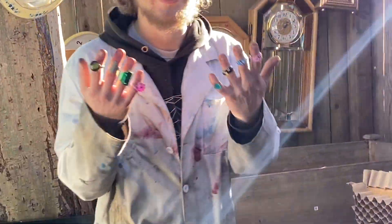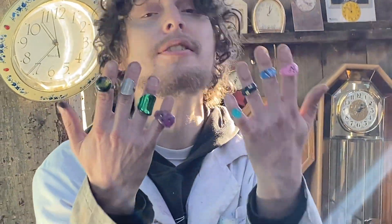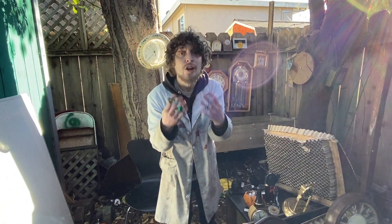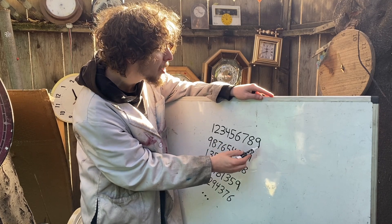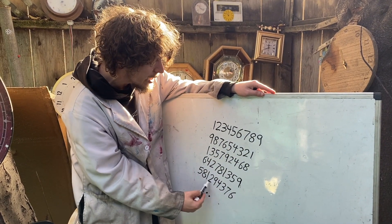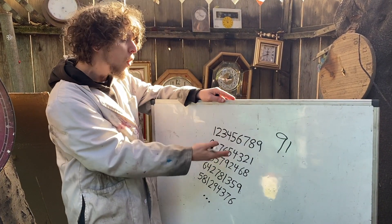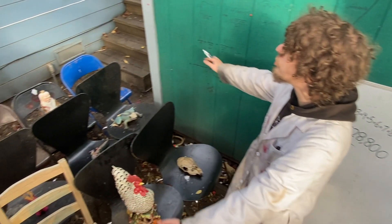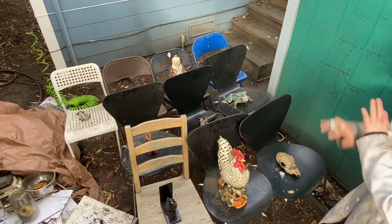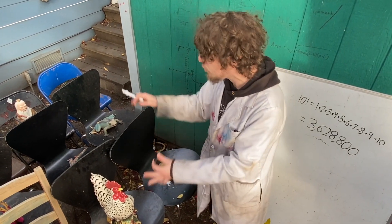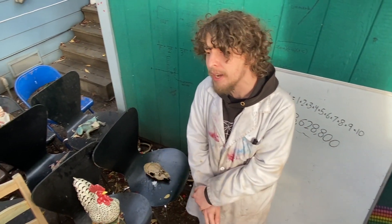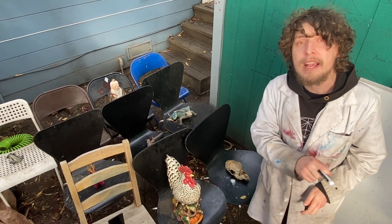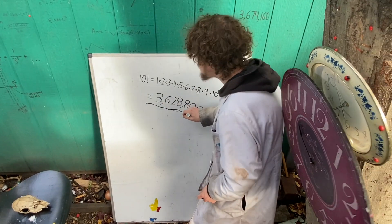If I had eight rings and wanted to put one on each finger, not counting the thumbs, there would be eight factorial ways — more than 40,000. And if I wanted to see how many numbers contained all the digits from one through nine exactly once each, the answer is nine factorial. If I was teaching a class of 10 students with 10 chairs, there are 10 factorial different seating arrangements — more than 3 million ways.